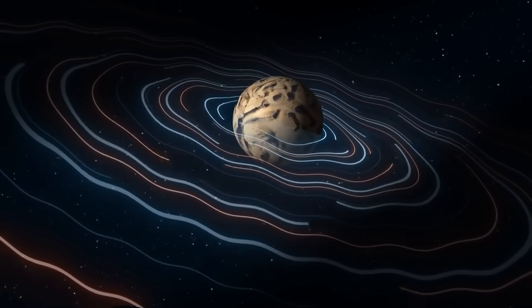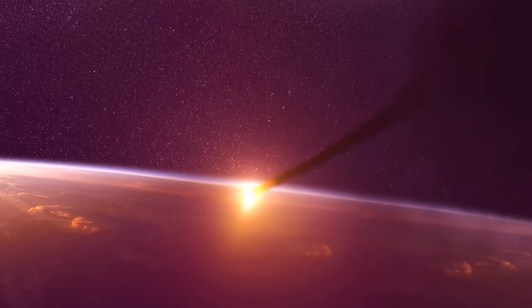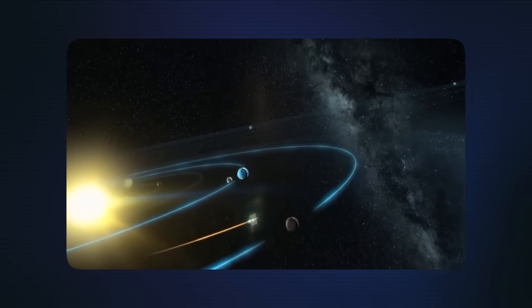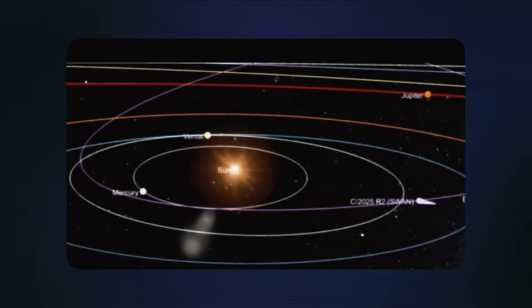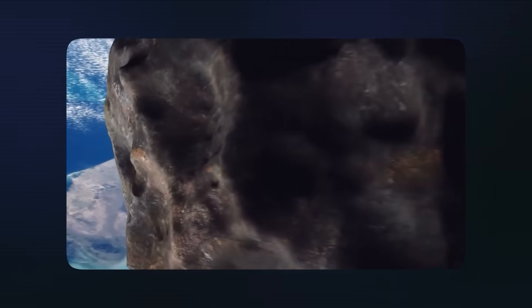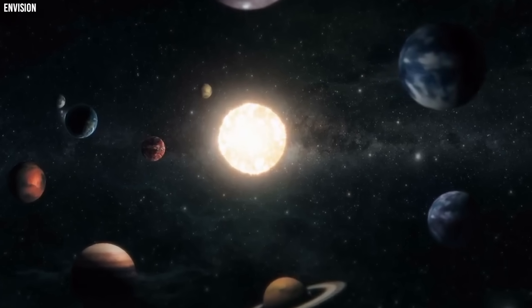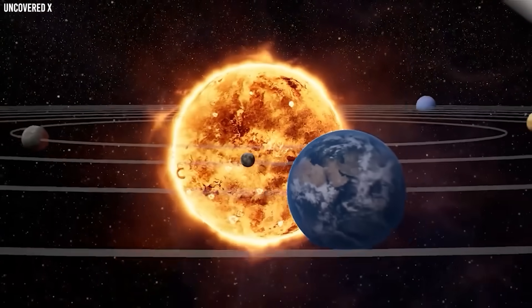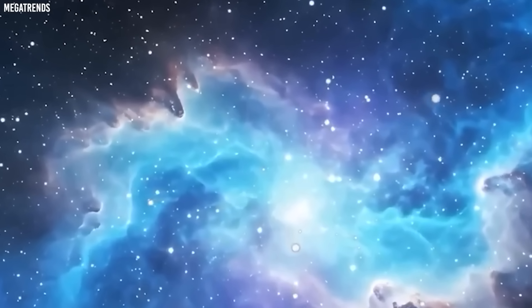Meteoroid stream dynamics are governed by complex gravitational and non-gravitational forces that act over astronomical timescales. When a comet releases particles during perihelion passage, those particles initially follow orbits very similar to the parent comet. However, solar radiation pressure affects different sized particles differently, causing the stream to gradually spread out, both along the comet's orbital path and perpendicular to it. Larger particles maintain orbits closer to the original trajectory, while smaller particles get pushed into slightly different orbits. SWAN might not have been in the inner solar system for over a thousand years, which means any dust it left behind would have had centuries to spread out and dissipate.